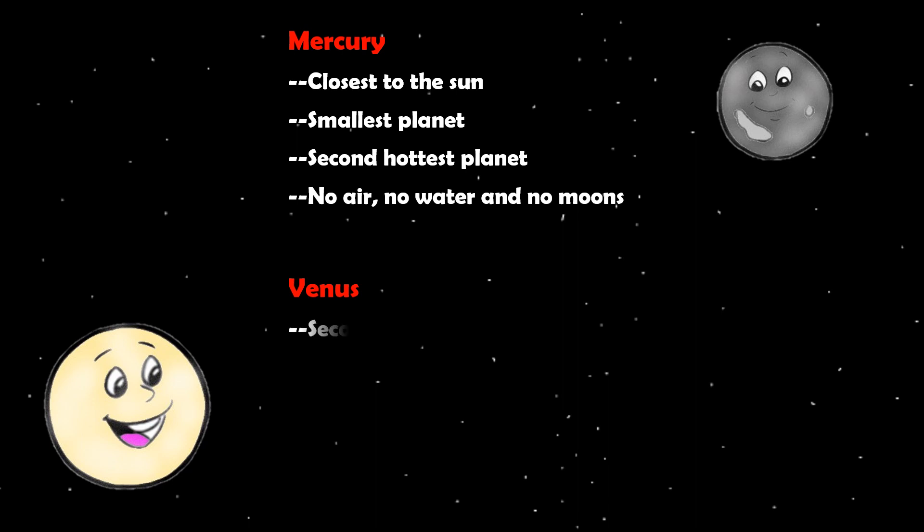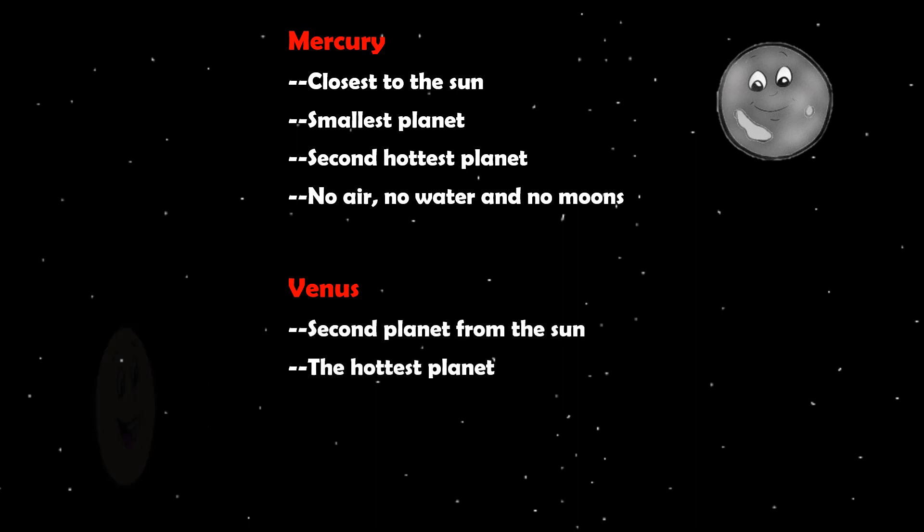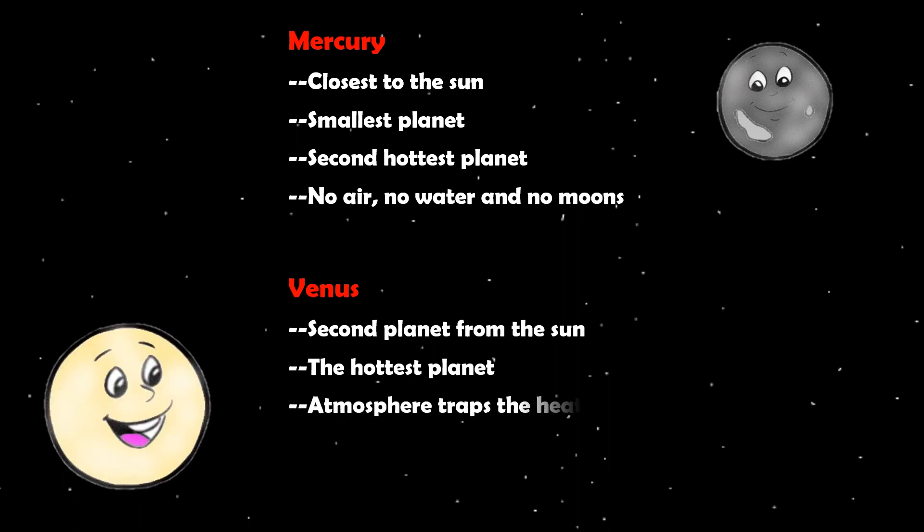Venus is the second planet from the Sun. It is the hottest planet. It has atmosphere that traps the heat of the Sun, making it the hottest planet. It has mountains and volcanoes. It has no water and no moons.